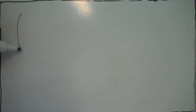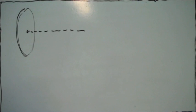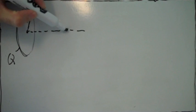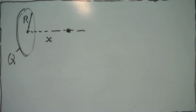In this problem, we have a ring of charge. This is the axis of the ring, the radius is r and the total charge is q. The first thing we've got to figure out is what is the potential at some point a distance x away from the center, a distance x along the axis.